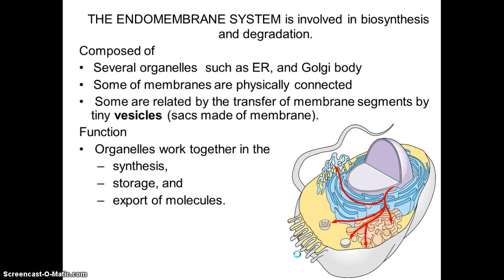The second compartment is what we call the endomembrane system — it's a series of organelles involved in biosynthesis and degradation. This series is called the ER, and as soon as the protein is made, it goes out wrapped in a package in a vesicle. The vesicle is shipped to the Golgi body, which will further chemically modify that protein and then package it and send it out to the cell. A vesicle is just a sac surrounded by cell membrane, and they function together to produce, store, and export molecules.